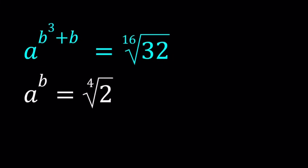Hello everyone. In this video, we're going to be solving a homemade exponential system. I call this homemade because I came up with the problem, but these problems are very easy to come up with. Anyway, we have a to the power b cubed plus b equals the 16th root of 32, and a to the power b equals the 4th root of 2. And we're going to be solving for a and b values.